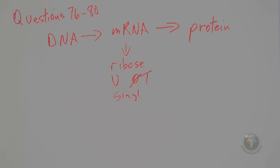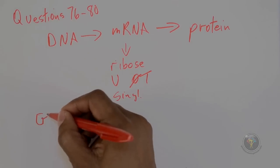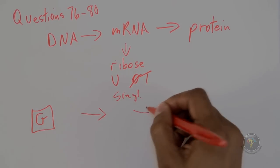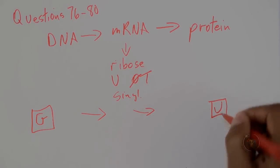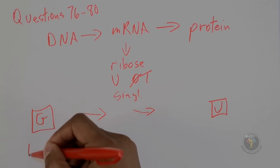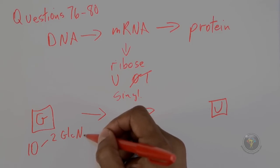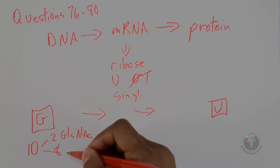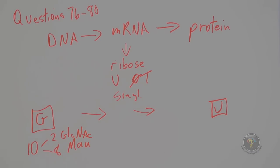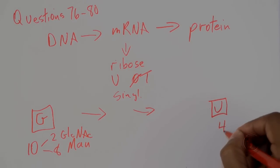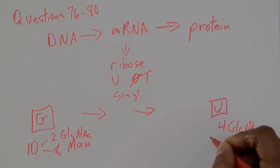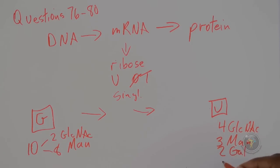So it gives some information here. They talk about this G thing, and it's going through different stages, ends up with U. And the G, it says, has 10 subunits. Two are this GlcNAc, okay, and eight mannose is what it has at the beginning. And then over here, way at the end, it has four GlcNAc, and it has three mannose, two Gal, and two SA. Looks like a grocery list.